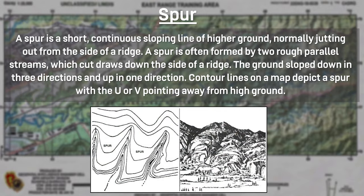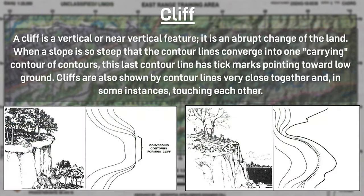A spur is a short continuous sloping line of higher ground normally jutting out from the side of a ridge, often formed by two roughly parallel streams cutting draws down the side of a ridge. The ground slopes down in three directions and up in one. Contour lines depict a spur with the U or V pointing away from higher ground. A cliff is a vertical or near-vertical feature — an abrupt change of the land. When a slope is so steep that contour lines converge, the last contour line has tick marks pointing toward the low ground, and contour lines may touch each other.